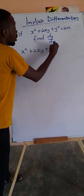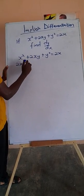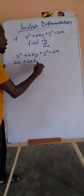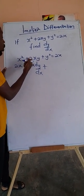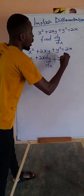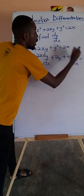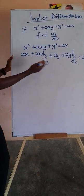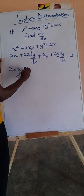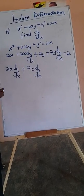Let's differentiate x squared plus 2xy plus y squared equal to 2x. Differentiating x squared gives 2x. Then 2xy is a product — we'll keep 2x and differentiate y, getting dy/dx. Plus, we keep y and differentiate 2x, getting 2, so we attach y to get 2y. Then we differentiate y squared, getting 2y, and attach dy/dx to it. Differentiating the linear term on the right gives 2. Now we group those with dy/dx together: 2x dy/dx plus 2y dy/dx equals 2 minus 2x.